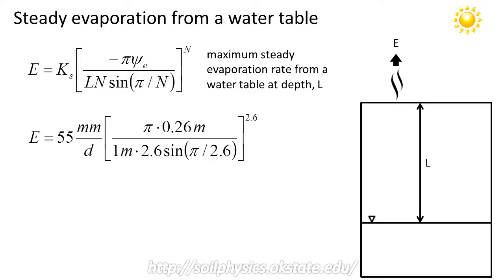So now I've plugged those coefficients into our equation. As you can see here, 55 millimeters per day is the K_s value. The depth of the water table is 1 meter. The N exponent is 2.6. The air entry potential is 0.26 meters. Now notice the negative sign in the air entry potential, negative 2.6 meters, has canceled out the negative sign in front of the π.